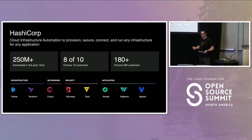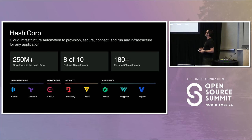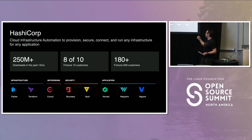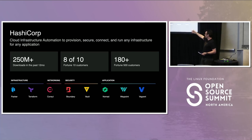We primarily started off as an open source company, and then we offered enterprise options for most of our tools. We have a product line of eight applications, with another one coming that's more around development and UX. These eight platform tools are divided based on where they fall in what we call the cloud operating model.